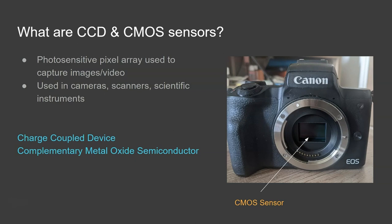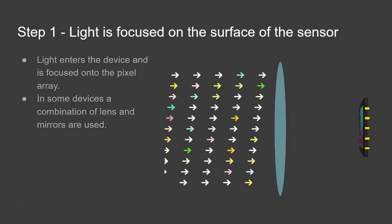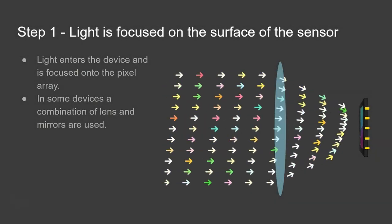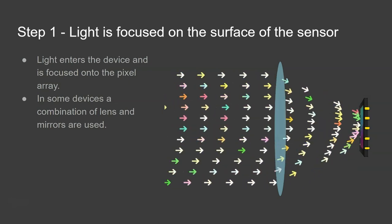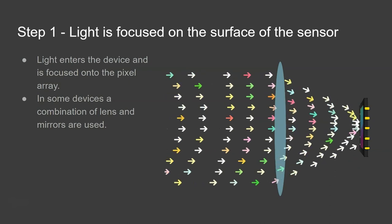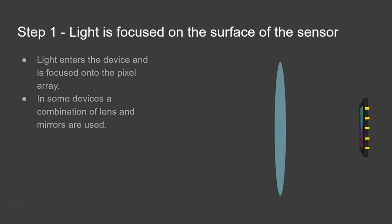Okay so let's have a look at the capture process. Step one, light is focused on the surface of the sensor. So using a lens and sometimes a mirror depending on the device, the light is bent so that it lands on the surface of this pixel array on the front of the sensor.